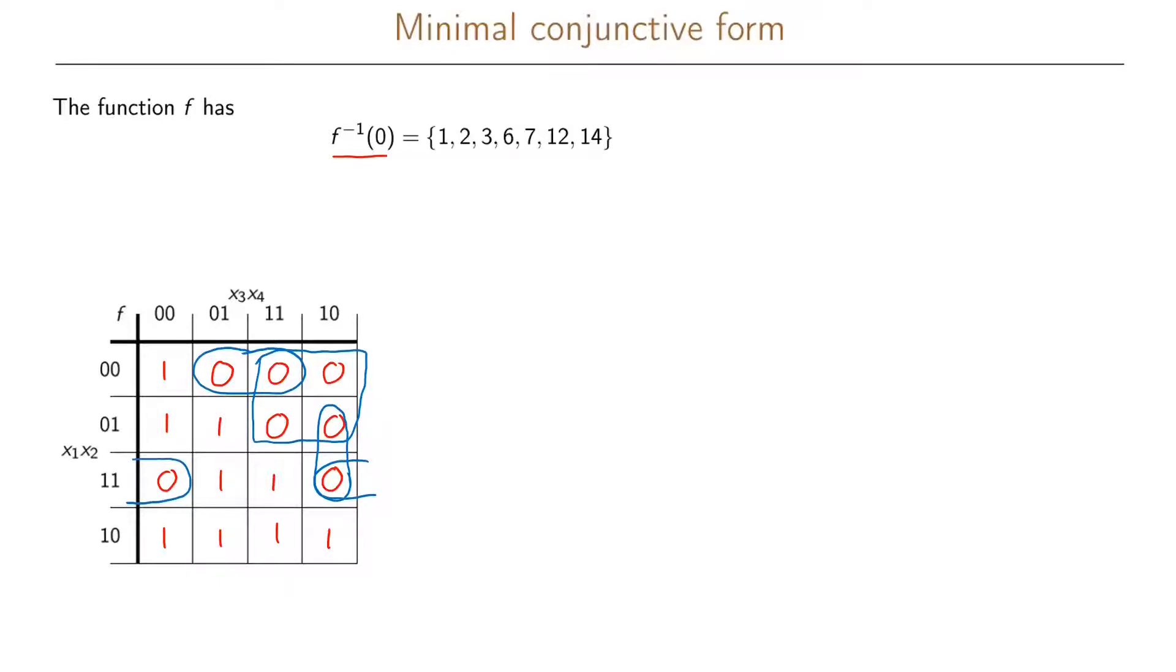Now we just name these four implicants. We call this one A, we call this one B, we call this one C, and then we call this prime implicant D.